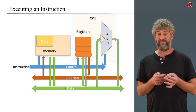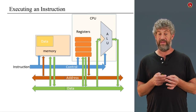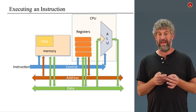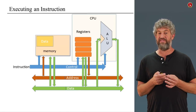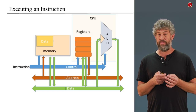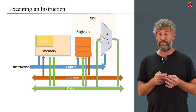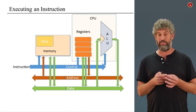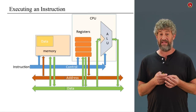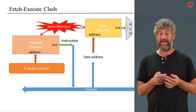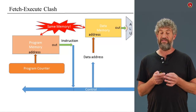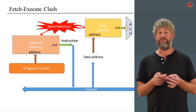Rather than delving deeper into those specifics, I want to step back and look at a certain problem I've glossed over so far — the fact that we really have a clash between the fetch cycle and the execute cycle. Both the program and the data reside in memory. In the fetch cycle, we need to put the address of the next instruction into memory's address input. But in the execute cycle, we need to access data that also resides in memory, using a completely different address. Because we have a single memory, that's a clash — we can't put both the instruction address and the data address in at the same time.